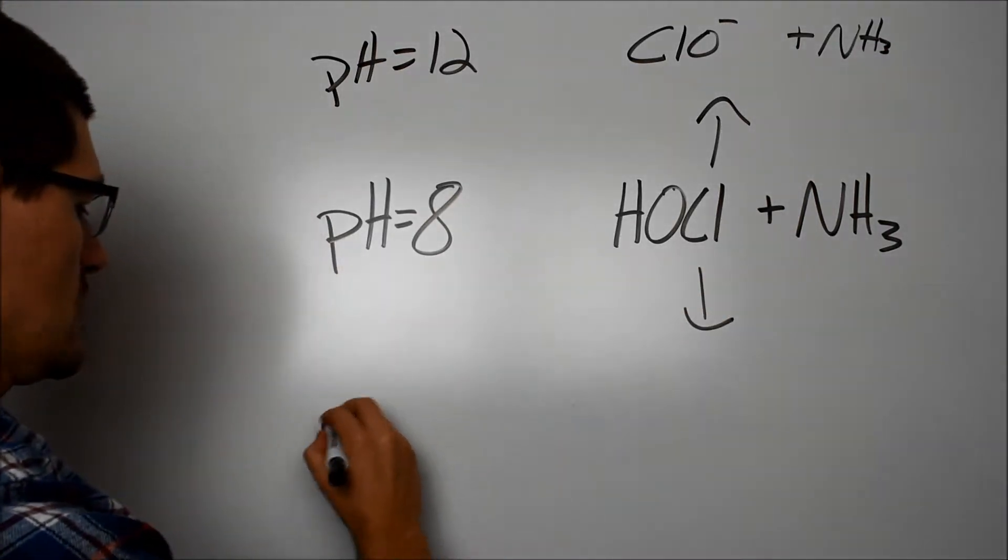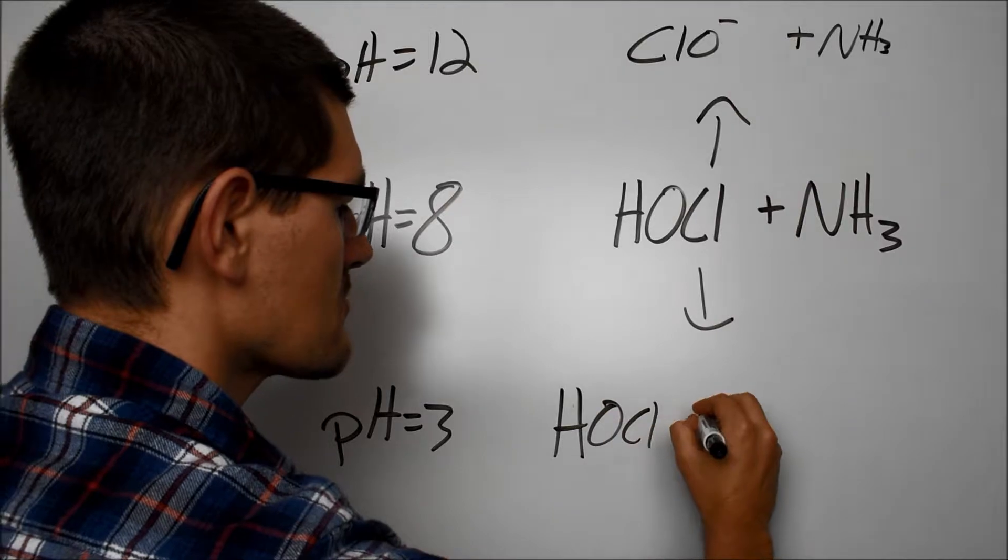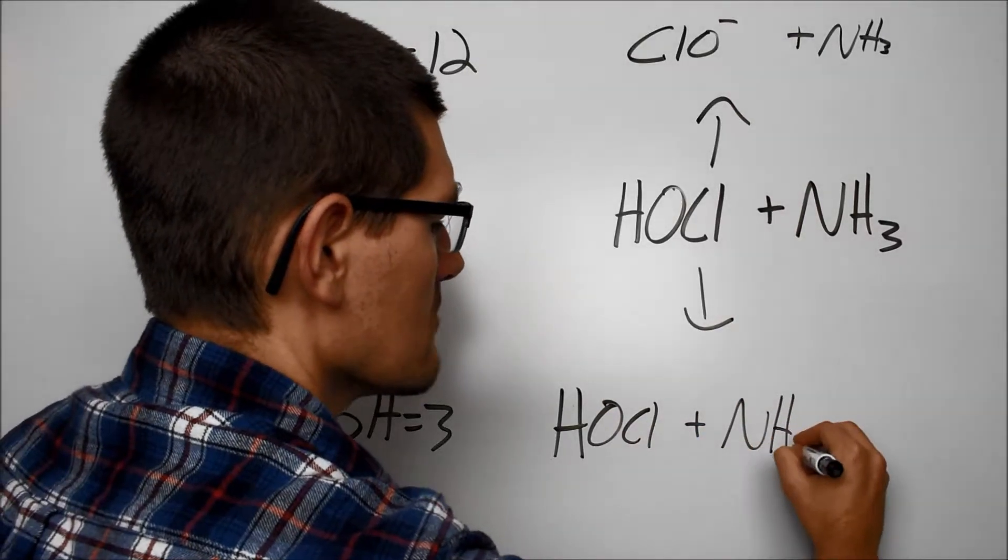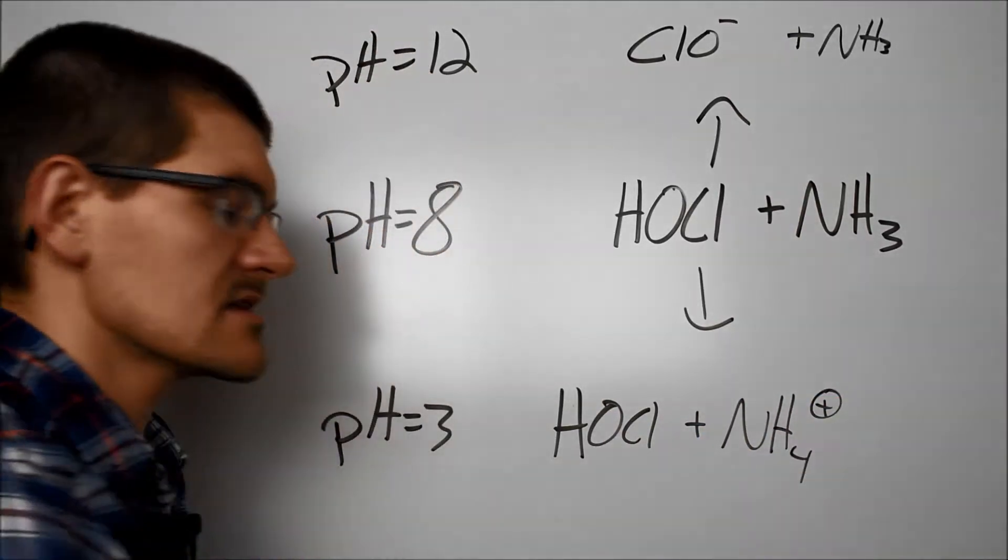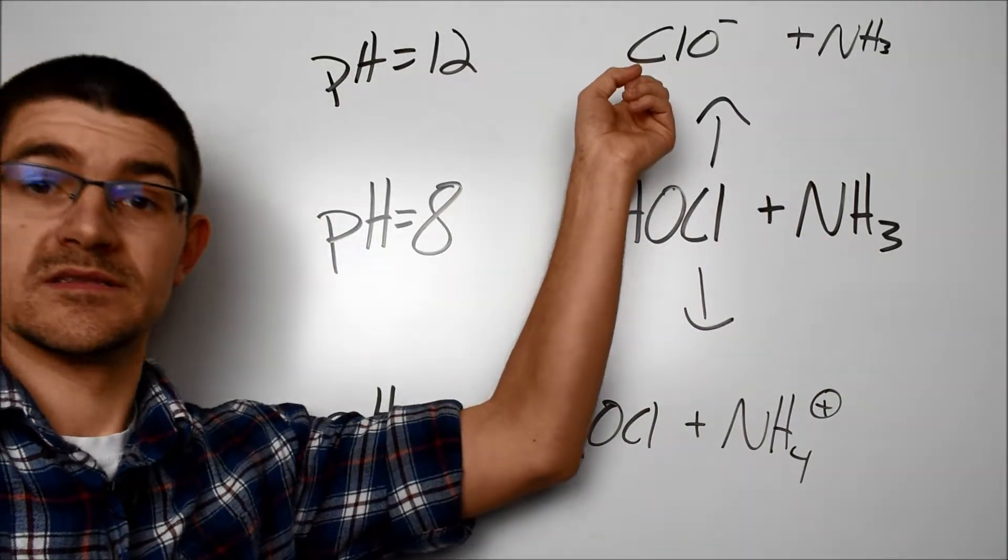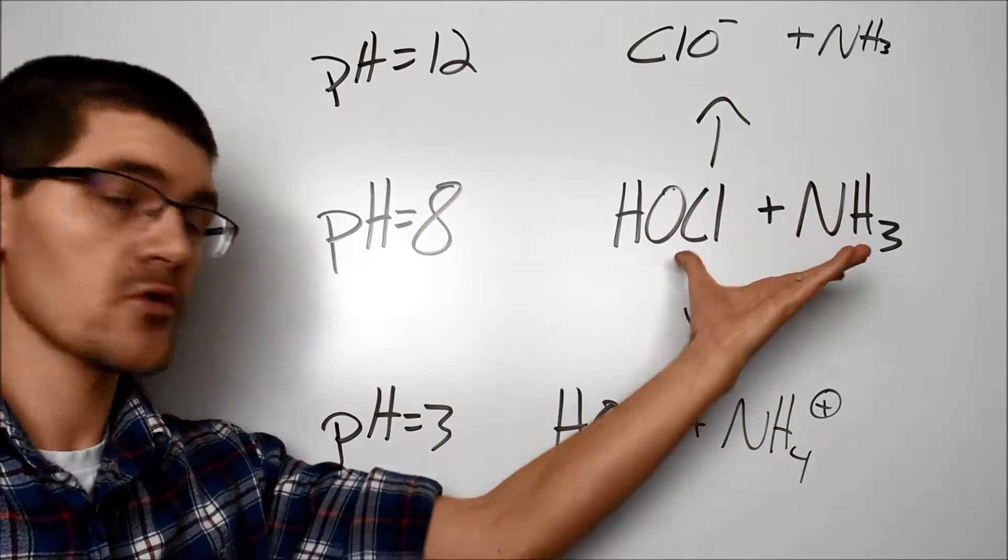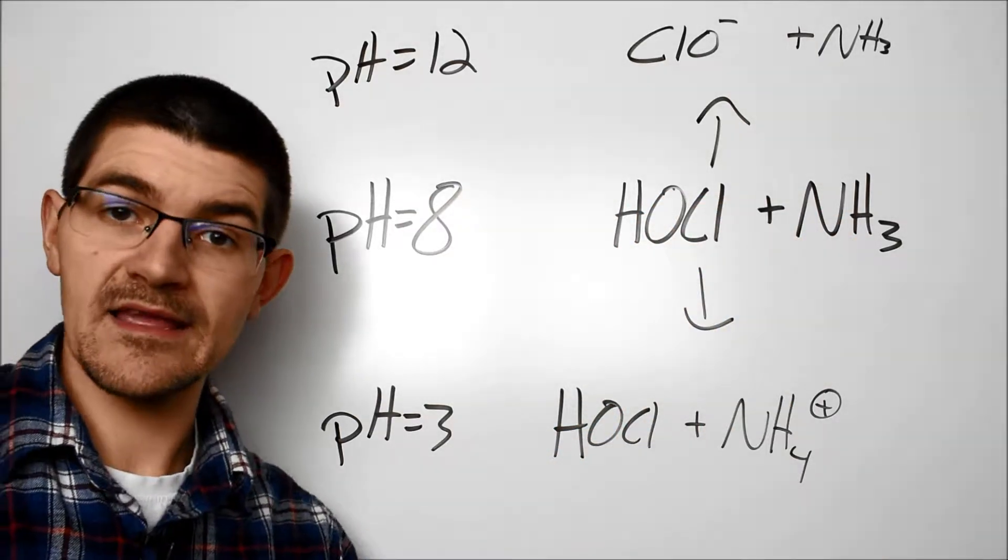On the flip side, if we go too low, let's say down to a pH of 3 or so, the hypochlorous acid will still be protonated, but we will also protonate the ammonia into its conjugate acid, ammonium. Here doesn't react. There doesn't react. We have to have the pH in this nice, happy middle ground in order to get this reaction to proceed and get that monochloramine.